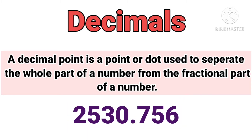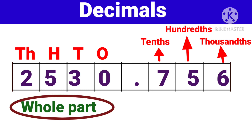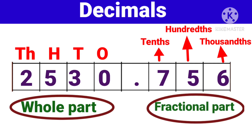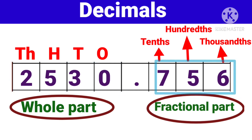Now let us learn briefly about decimals. Look here — the number is 2530.756. Yahaan par 2530 jo hai, woh hai whole part. And 756 jo hai, woh hai fractional part. Yani, dot se pahle, decimal se pahle jo number aayega, usse hum whole part kehte hai. And decimal ke baad wale numbers ko hum fractional part kehte hai.